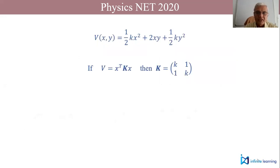That's our potential energy. We can write it in terms of matrix formalism as x transpose K matrix times x column vector. That x column vector will be x and y.